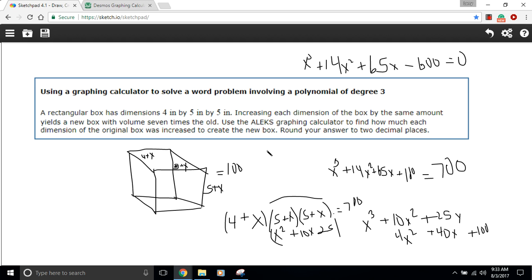So, let's see, we wanted to round our answer to two decimal places. So 4.23 inches would be our answer. So that is how to use the graphing calculator to solve a word problem with a third degree polynomial.